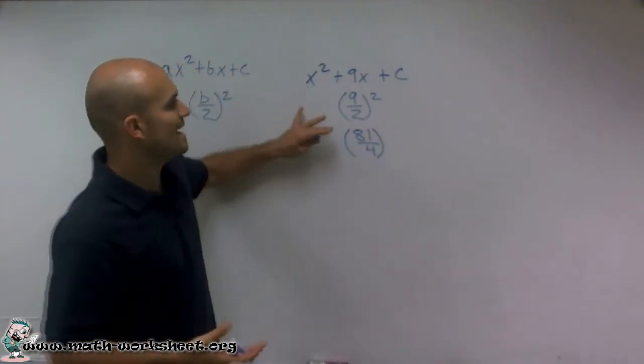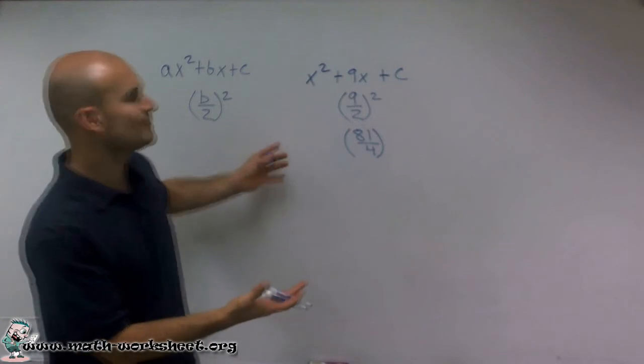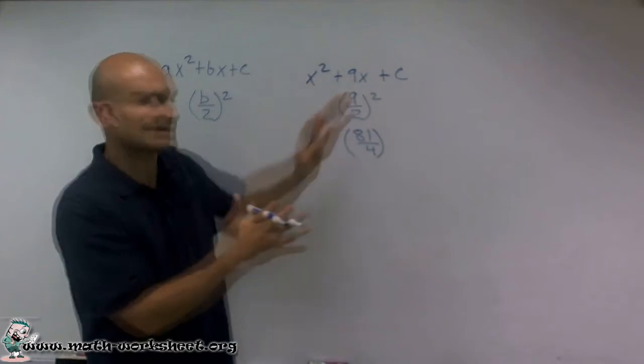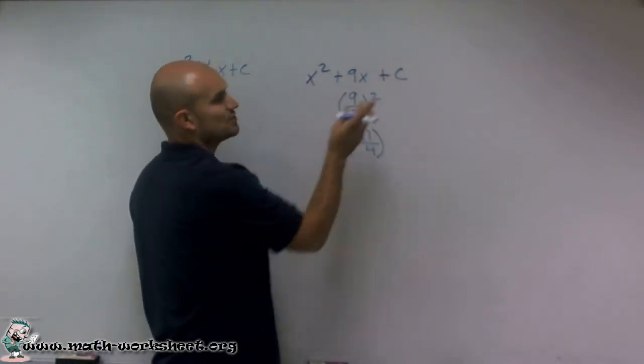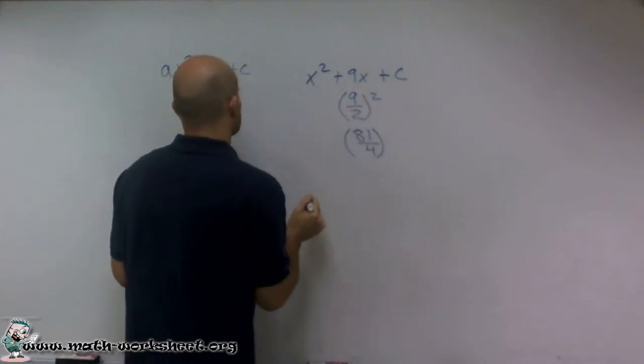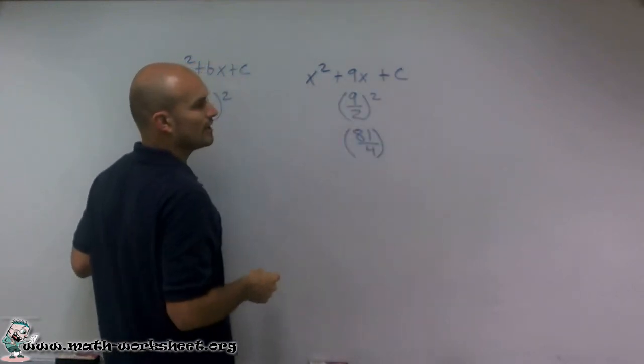The next thing we do when completing the square is we make sure we add or subtract that. But our c is going to help us determine that perfect square trinomial. So in this case, my c is going to be 81 over 4.